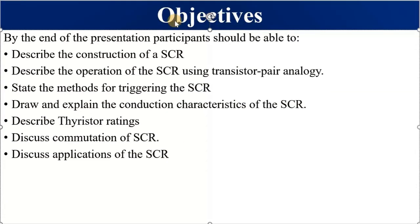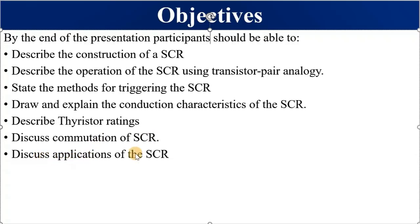Objectives — this is what you should be able to do after watching this video. You must be able to describe the construction of a Silicon Controlled Rectifier, describe its operation using the transistor PNP analogy, state the methods used to trigger it, draw and explain its conduction characteristics, describe SCR ratings, discuss commutation, and discuss the applications of the Silicon Controlled Rectifier.